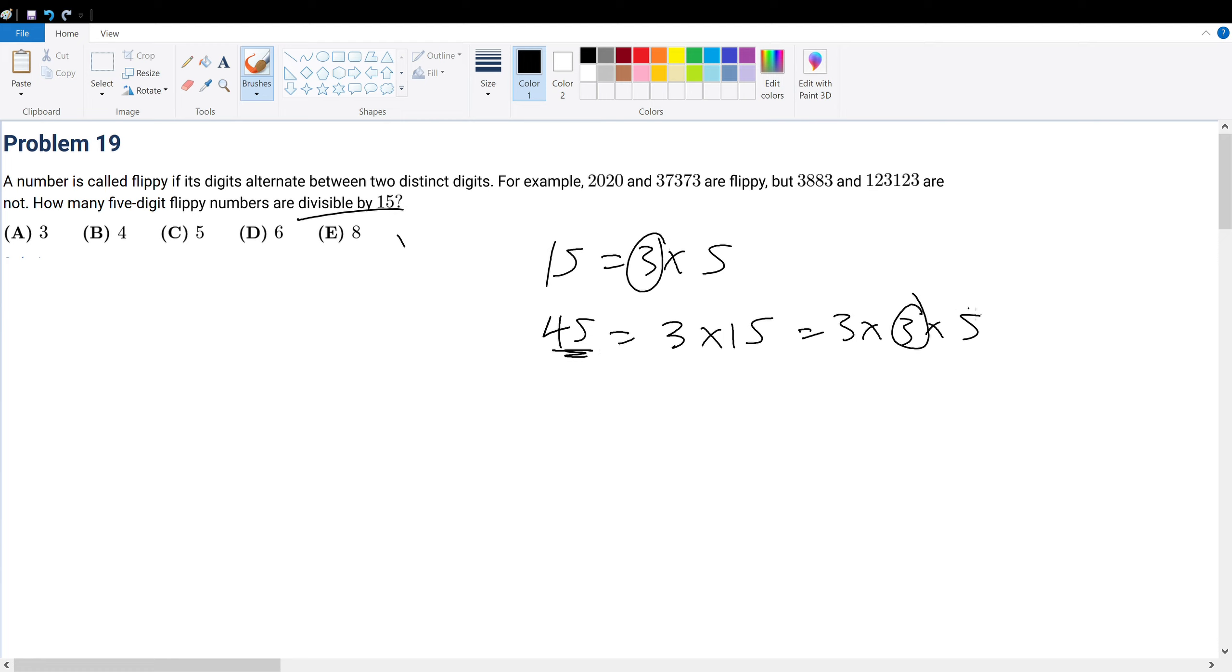The reason why it's divisible is because I have one factor of 3 and one factor of 5. I have the minimum number of factors of the number I'm dividing with, which is 15. Therefore, I can divide 45 by 15. That's the logic, and it applies for any other number. So going back to this question...